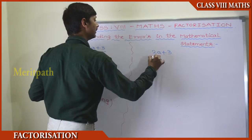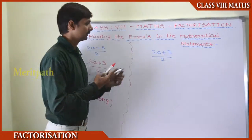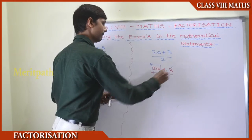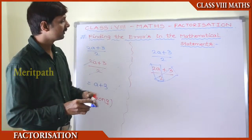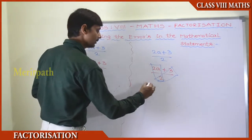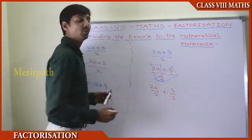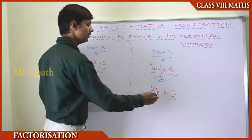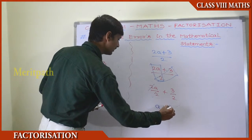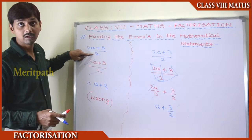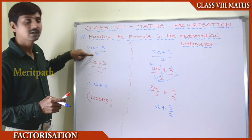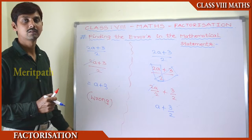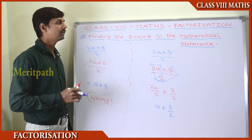The correct process for (2a + 3) ÷ 2 is to divide each term of the numerator by 2: (2a/2) + (3/2) = a + 3/2. Always remember: whatever value is in the denominator must be divided into each and every term of the numerator. These are the common errors to avoid when working with mathematical expressions.